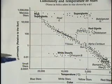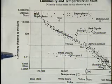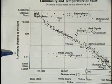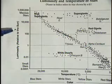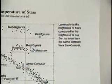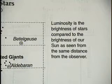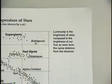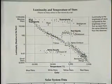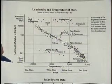Now, if we look up here, it says luminosity relative to the sun. First you need to know what luminosity means. We can pretty much know what relative to the sun means — that just means compared to the sun. Over here, we have an explanation of luminosity. Luminosity is the brightness of stars compared to the brightness of our sun, as seen from the same distance from the observer. So we're comparing how bright it is compared to the sun if we brought it to the same distance from us.